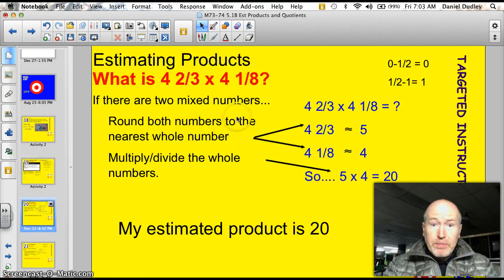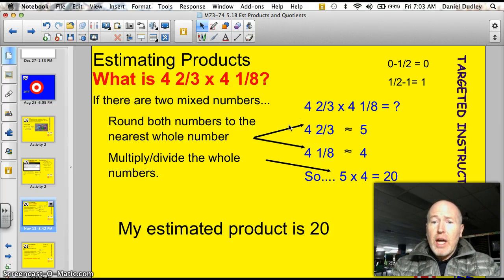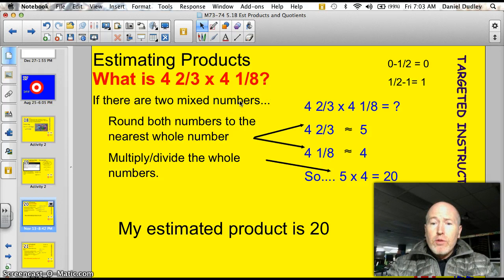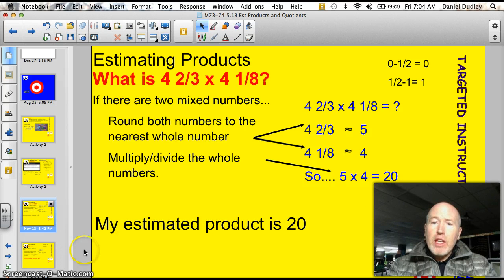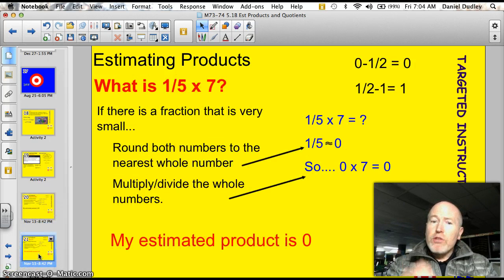Let's try a couple of examples here. What is 4 and 2 thirds times 4 and 1 eighth? Just like we did with sums and differences, we're going to round both numbers here because we have two mixed numbers. This time, we're rounding to the whole number, so it's a little bit easier. So, 4 and 2 thirds. Well, 2 thirds is bigger than 1 half, so I'm just going to call this bad boy 5. 4 and 1 eighth. 1 eighth is smaller than 1 half, quite a bit, so we're just going to call that guy 4. So, my estimated product is just multiplying these two numbers together, these two rounded numbers, 5 times 4, which is 20. My estimated product, 20. Slam bam, thank you, ma'am. It's pretty easy if you just kind of reason your way through it.